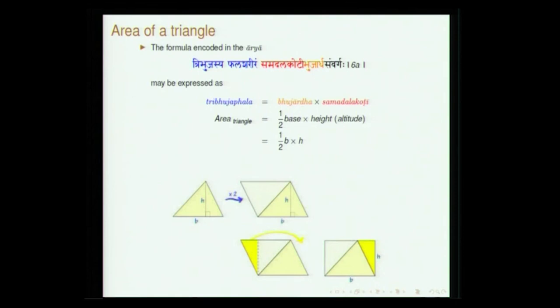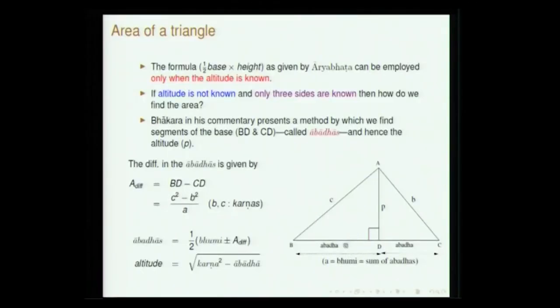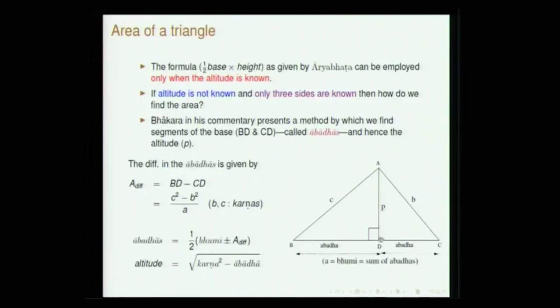The verse gives the formula for area, but if you do not know the height and only know the sides of the triangle, there must be a way to find it. This is discussed by Bhaskara in his commentary. The word 'abadha' is employed to refer to the two parts generated by dropping the perpendicular from the vertex. Bhaskara gives a method to first calculate the abadhas and then find the samadala koti (height). If only the sides are known, the base is taken for granted, and he presents a formula based on the three sides to find the height.